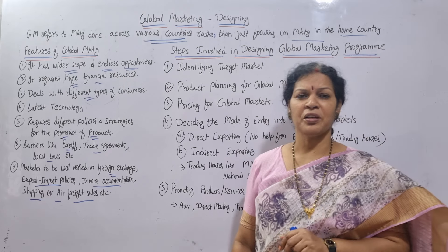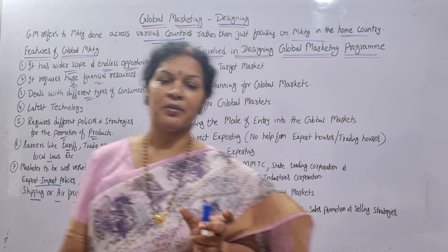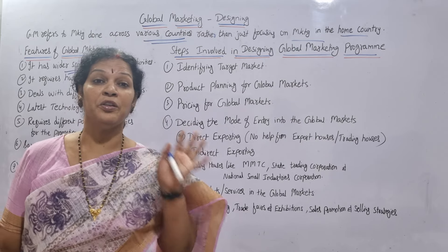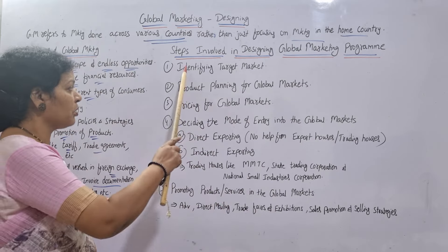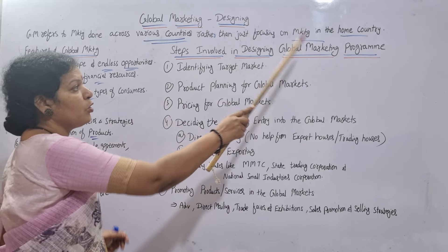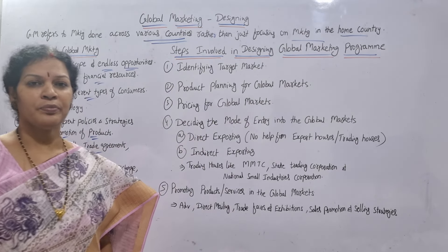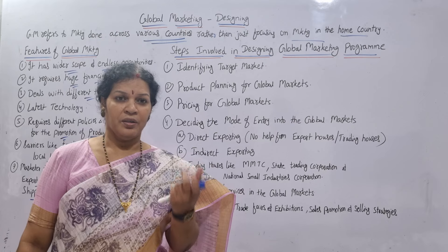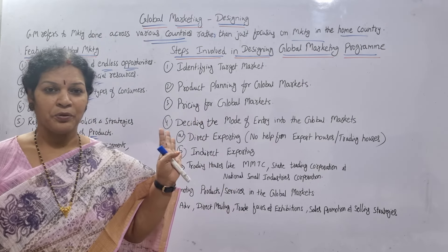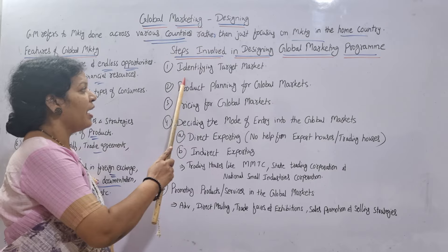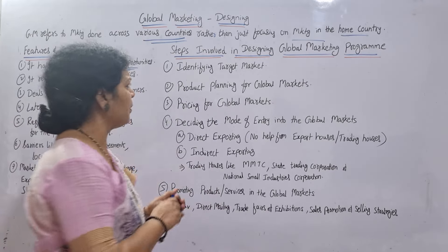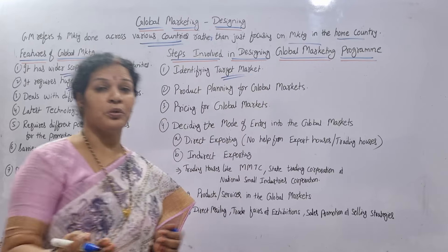Now, what are the steps involved in designing a global marketing program? When you want to go for global marketing, there are five steps. We'll focus on them one by one. The first step is identifying the target market.